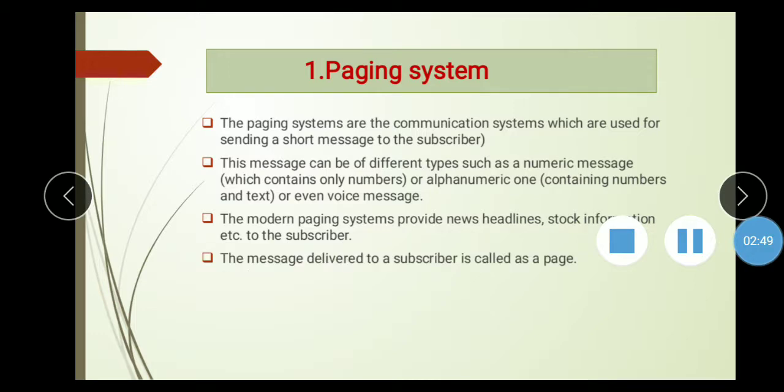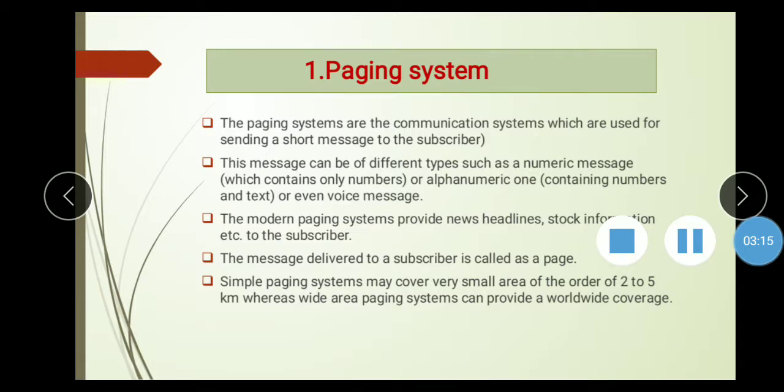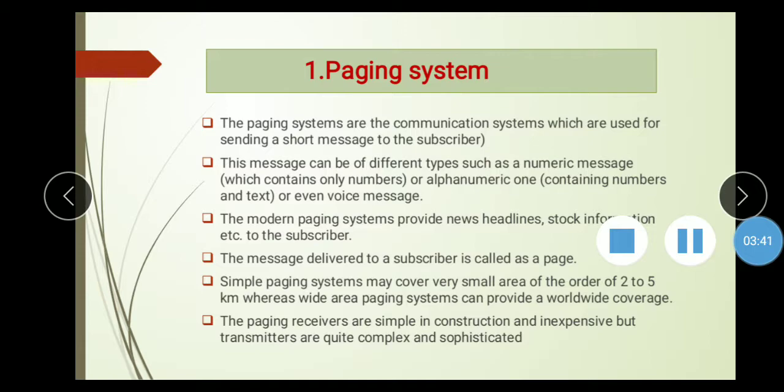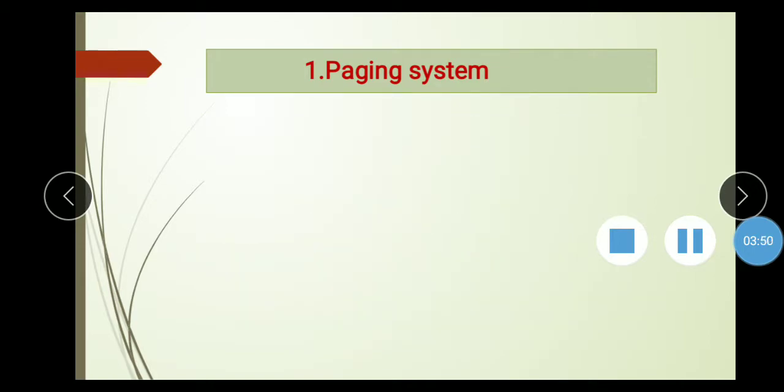The message delivered to a subscriber is called a page. Simple paging systems may cover a very small area of the order of 2 to 5 km, whereas wide area paging systems can provide worldwide coverage. Paging receivers are simple in construction and inexpensive, but transmitters are quite complex and sophisticated.